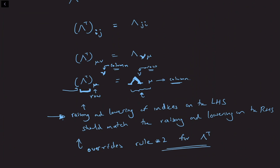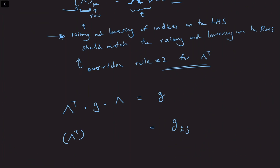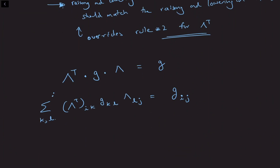Now let's see what this implies for the metric G and its indices. In matrix notation, we have the rule lambda-transpose · G · lambda = G. Let's put in indices: we write this as G_ij, and on the right-hand side we'd have lambda-transpose_{ik} g_{kl} lambda_{lj}, where we sum over the indices k and l. Let's keep the summation explicit for now so it's clear what we're doing, and keep the sum over k and l.